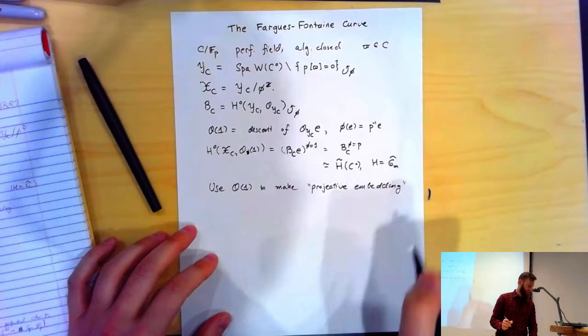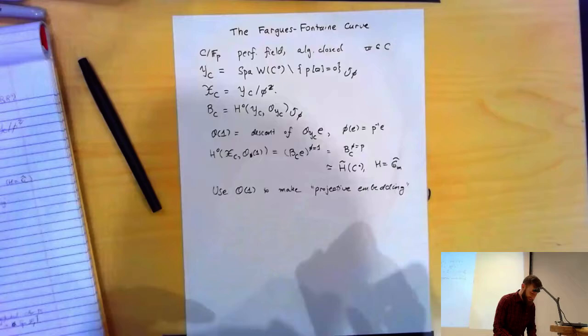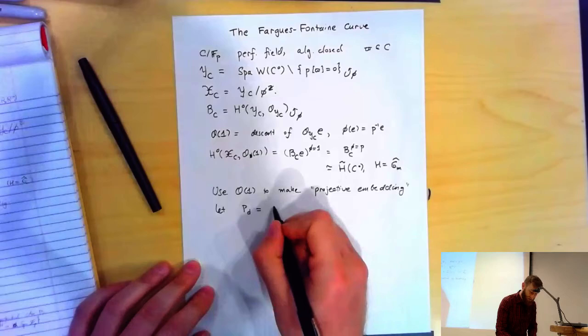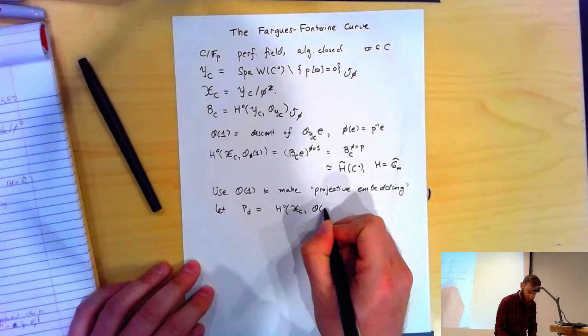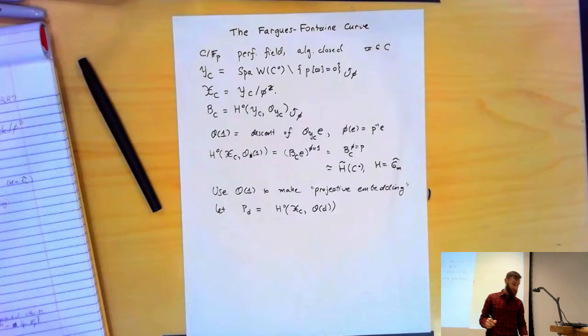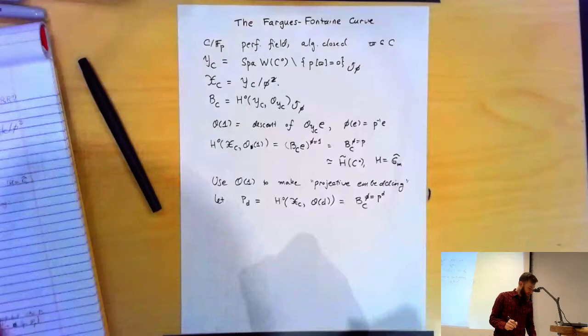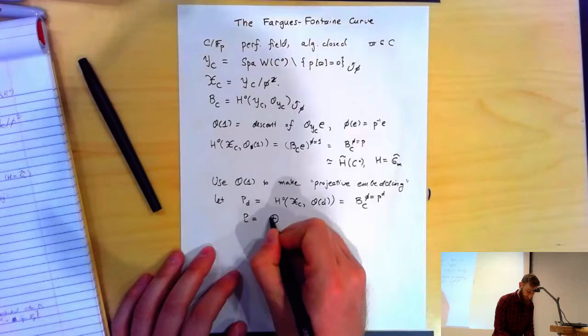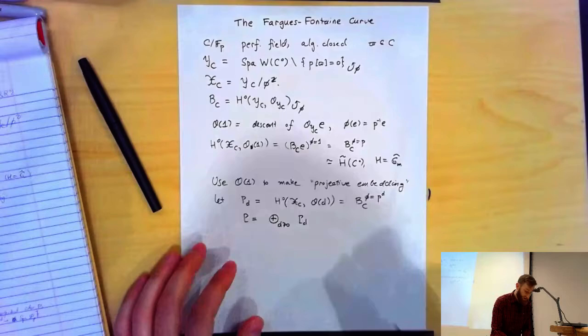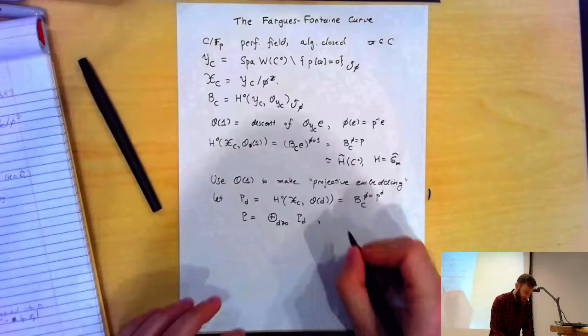We're going to use O(1) to make a graded ring. For every integer d, let P_d be the global sections of O(d) — the d-th tensor product of O(1). When you take global sections, you get the part where φ acts as p^d. I'm going to let P be this graded ring, and once I have a graded ring, I'm free to construct a scheme out of it. I'll call that (roman) X_C.